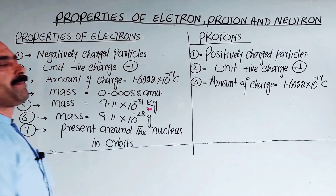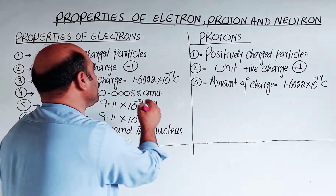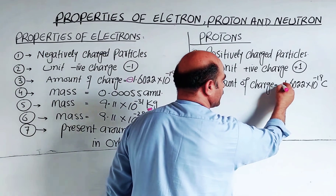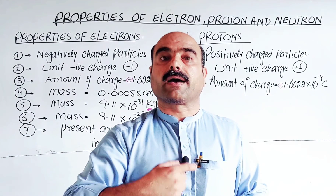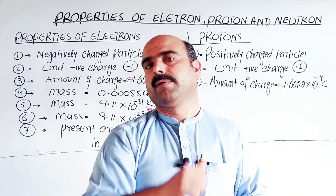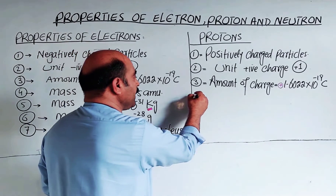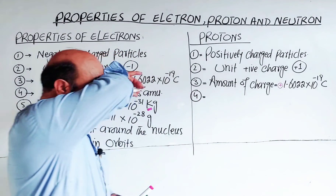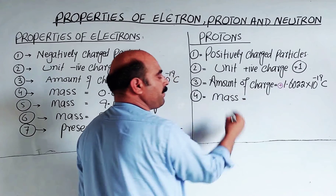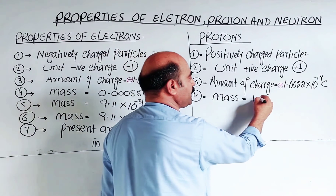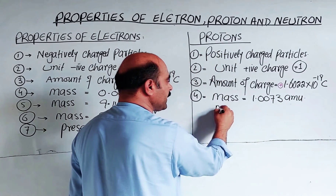The amount of charge on the proton is the same value as the electron — one has a positive charge and the other a negative charge. So the electron has minus one and the proton has plus one; the magnitude is equal. Regarding the mass of the proton: the proton is heavier than the electron. Its mass in atomic mass unit is 1.0073 AMU.